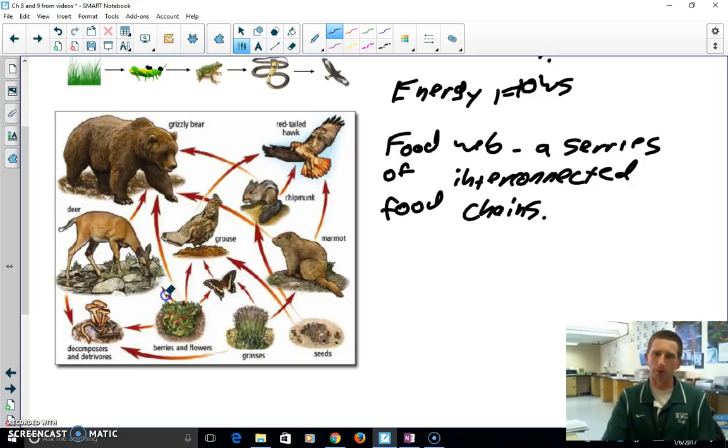And even this food web with all the arrows going every which way isn't even complete because everything, once it dies, is eaten by fungus and detritivores and bacteria and they're the decomposers. So this one only has the deer when it dies being eaten by the decomposer and the detritivores. But you get the idea, that a food web is a series of interconnected food chains.